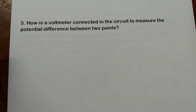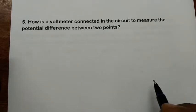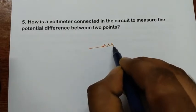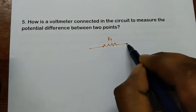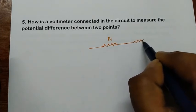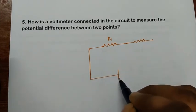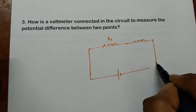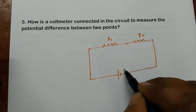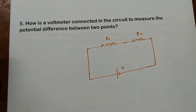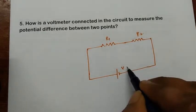How is a voltmeter connected in a circuit to measure the potential difference between two points? Let me draw a circuit here. This is the resistance R1, and here I am going to take another resistance R2, and I am going to keep a potential difference V here.